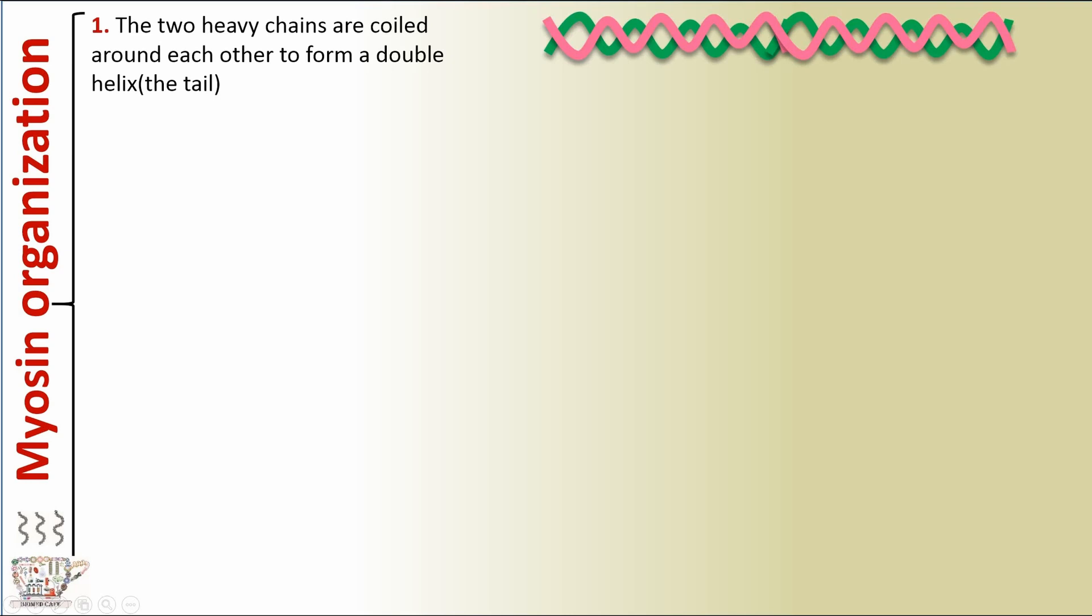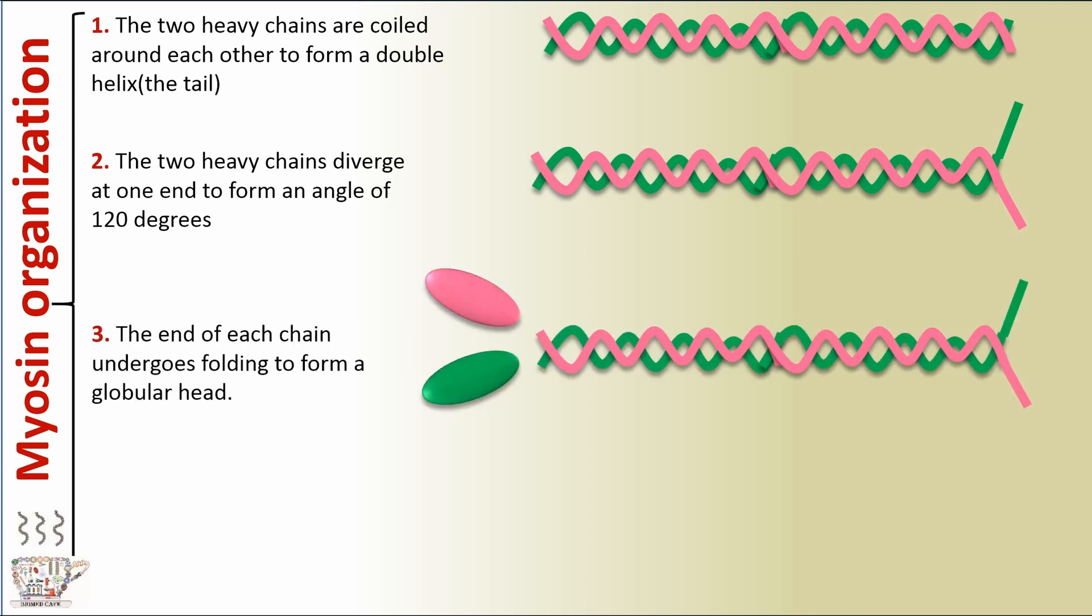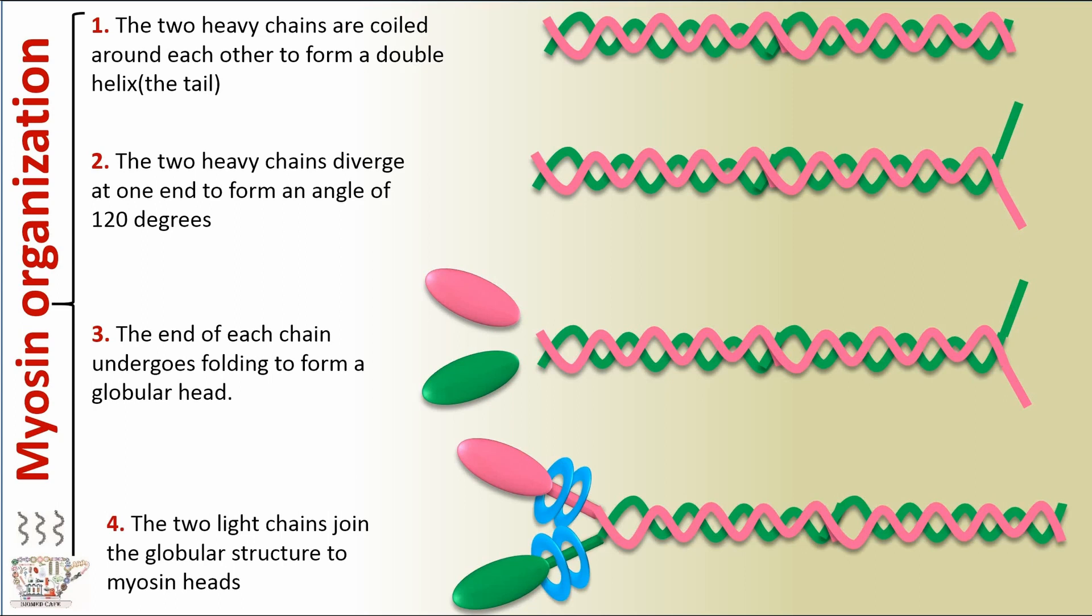Myosin organization. At first, the two heavy chains are coiled around each other to form a double helix or the tail. Then, the two heavy chains diverge at one end to form an angle of 120 degrees. The end of each chain undergoes folding to form a globular head. Finally, the two light chains join the globular structure to myosin heads.